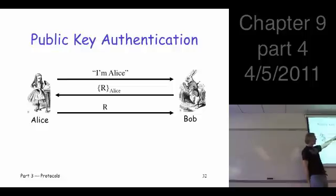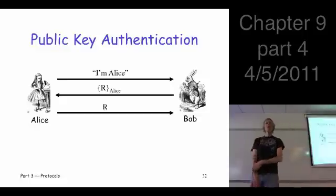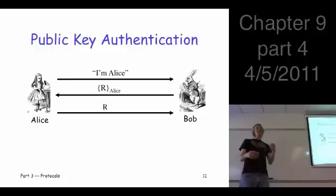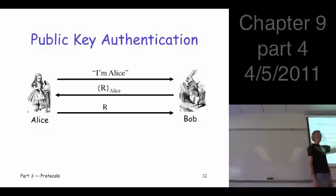So it works. It authenticates Alice. Bob can be convinced he's talking to Alice. What about Alice? Does she know she's talking to Bob here? Well, why not? It's encrypted. It's encrypted with a public key. Anybody could do that. Again, if you put Trudy over here who doesn't know anything, she could do everything that Bob's doing. So we don't authenticate the server in that case.